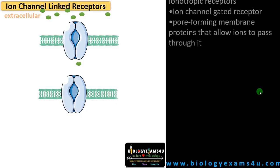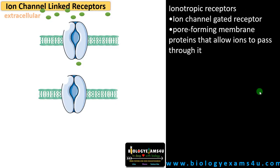Ion channel linked receptors are also called ionotropic receptors. The ion channel gated receptor is actually a pore-forming membrane that permits the movement of ions across this channel. Normally these ions cannot pass through the plasma membrane — ions can only pass through these ion channels.